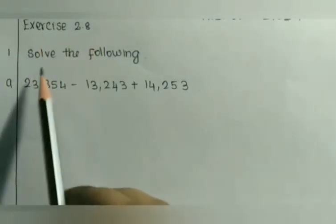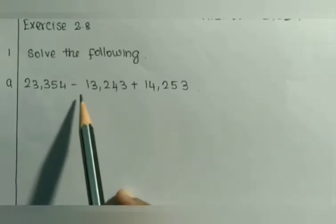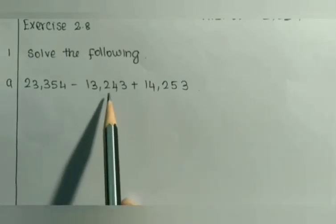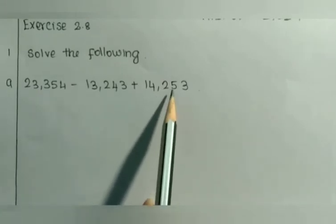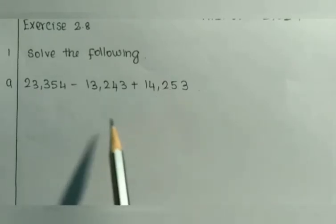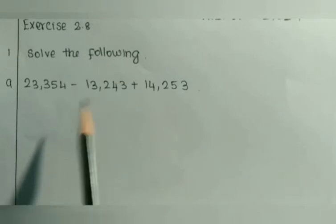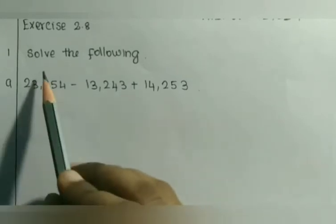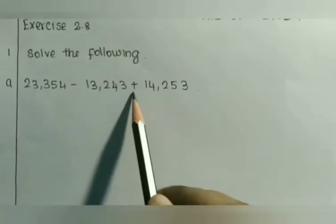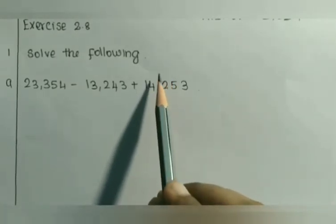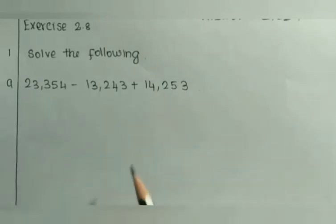Exercise 2.8: solve the following — 23,354 minus 13,243 plus 14,253. In this sum we are going to do the addition first. So look for the addends. 13,243 will be the first addend and 14,253 will be the second addend. Let us write these two numbers in columns first.